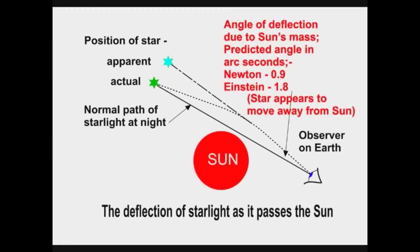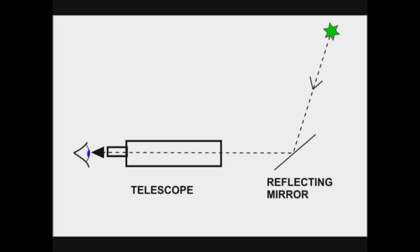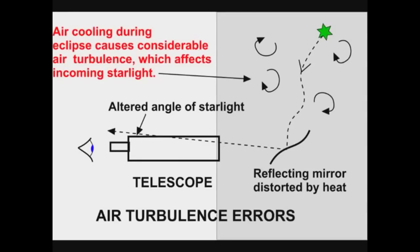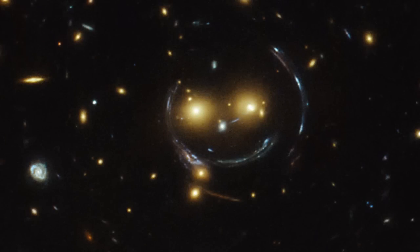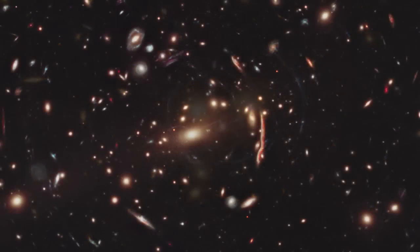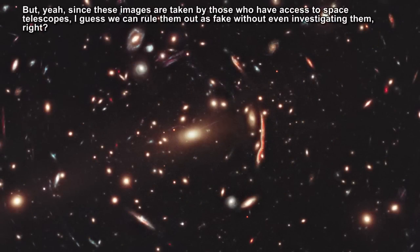The experiment that was said to confirm relativity and made Einstein famous was the Eclipse Experiment of 1919. As starlight passes the Sun, it is slightly bent. But there are many problems with this experiment. Firstly, they used a mirror to reflect the light into a horizontal telescope. Secondly, the heat of the Sun on the mirror warps it. Thirdly, as the cone of darkness crosses the Earth, it causes considerable turbulence in the atmosphere due to the change of temperature. None of this is in dispute.